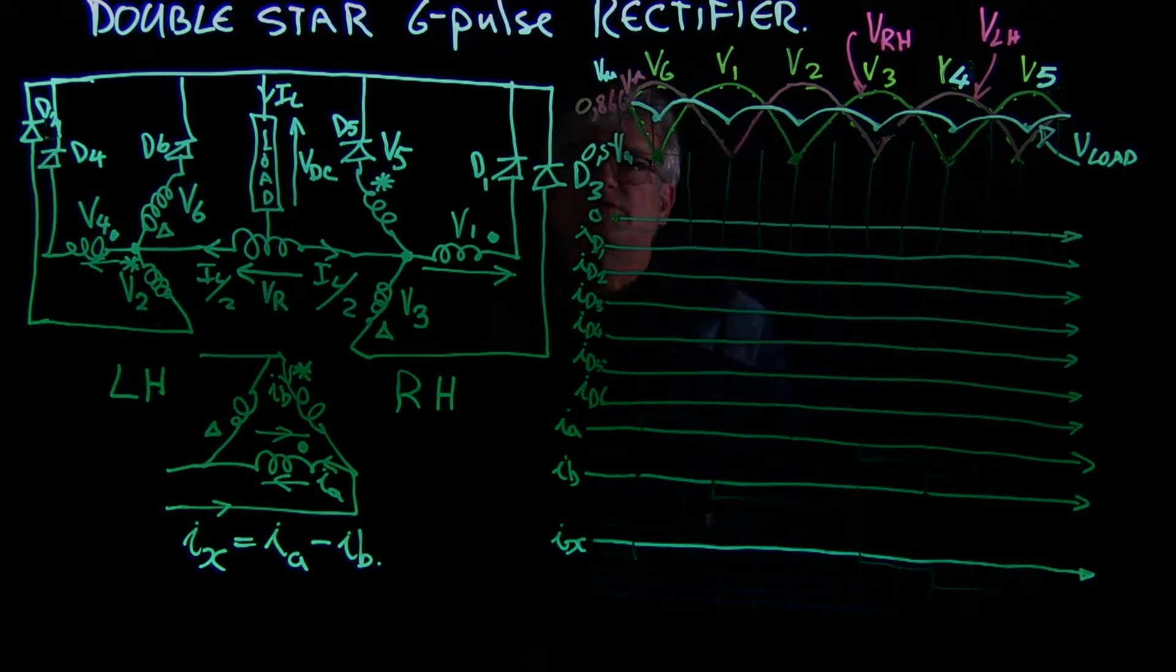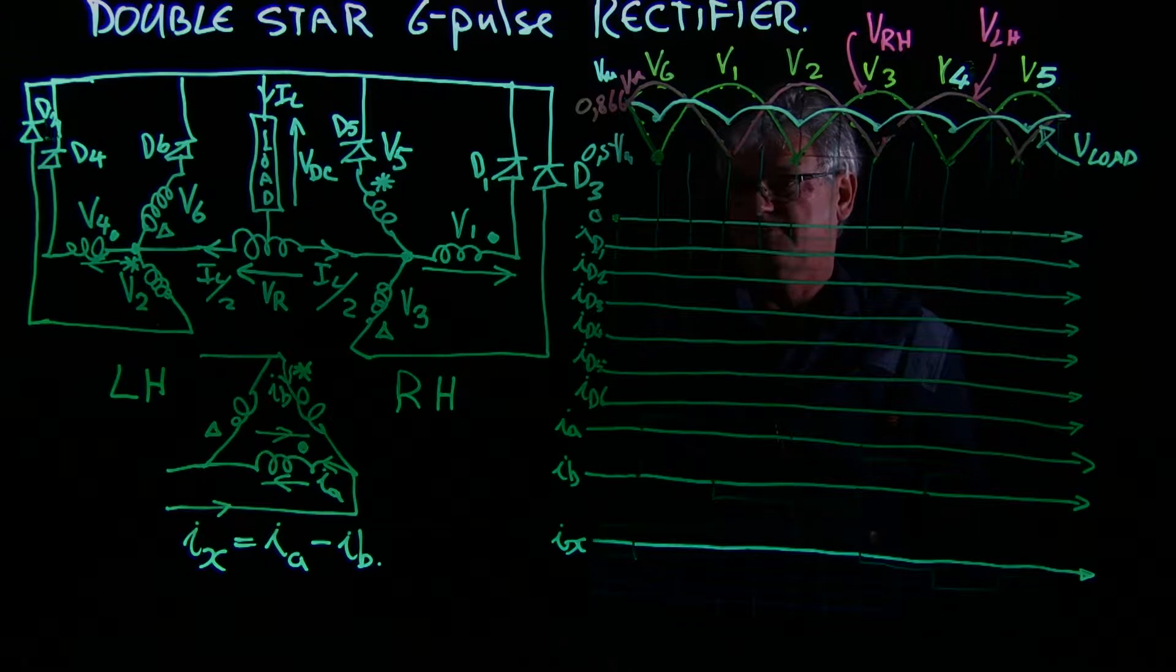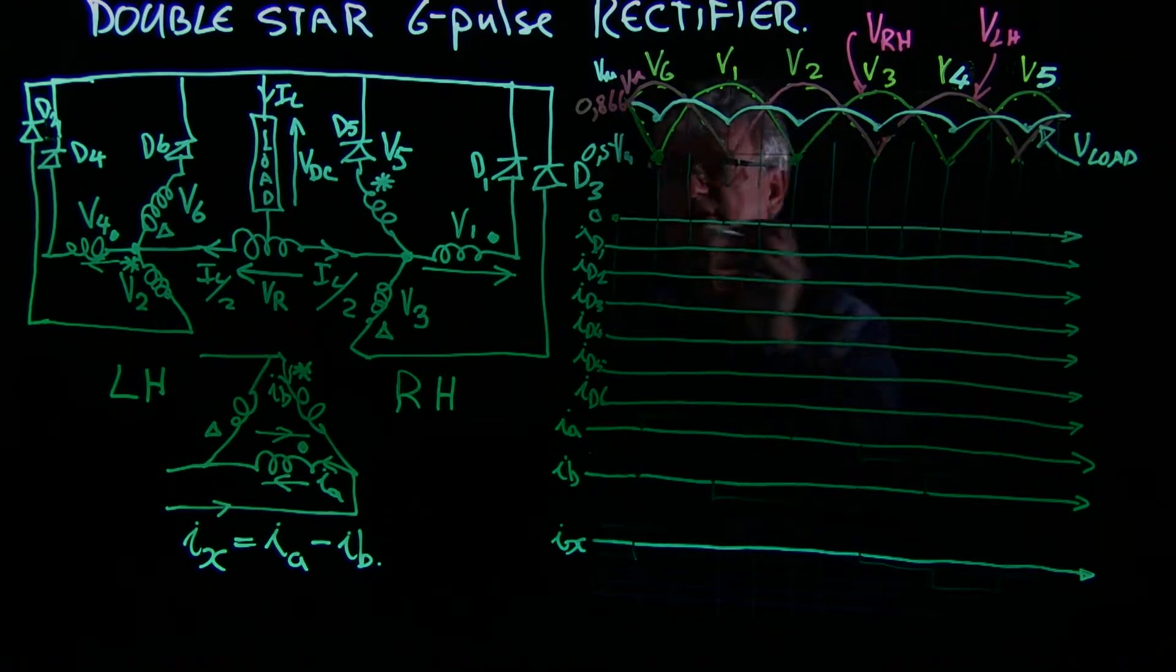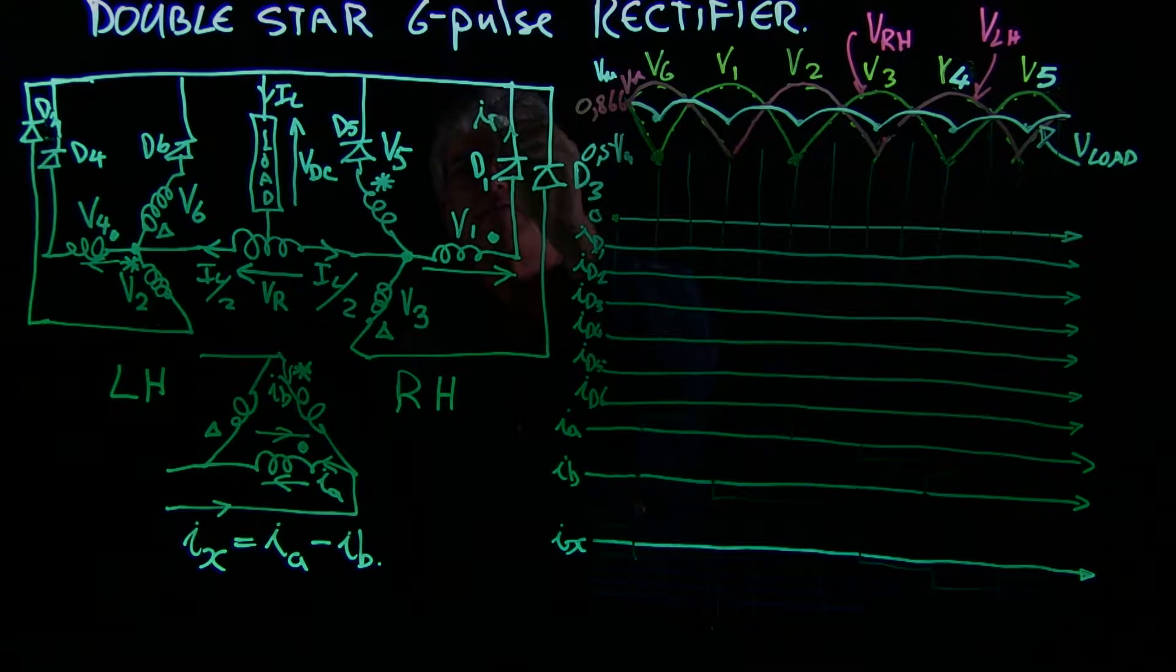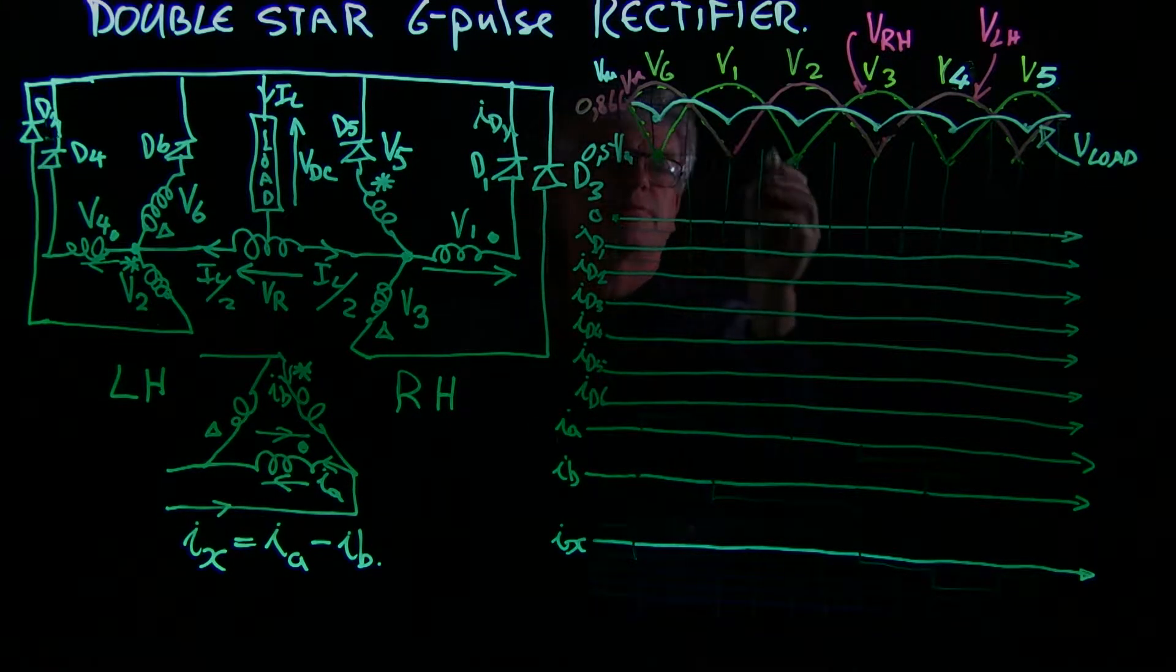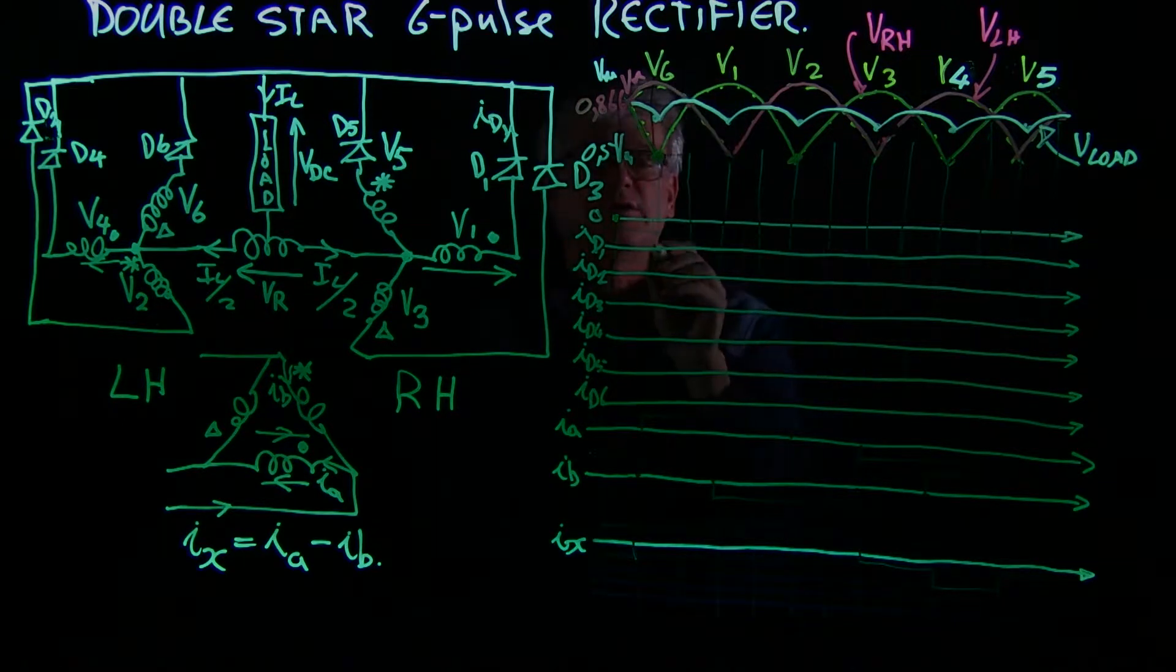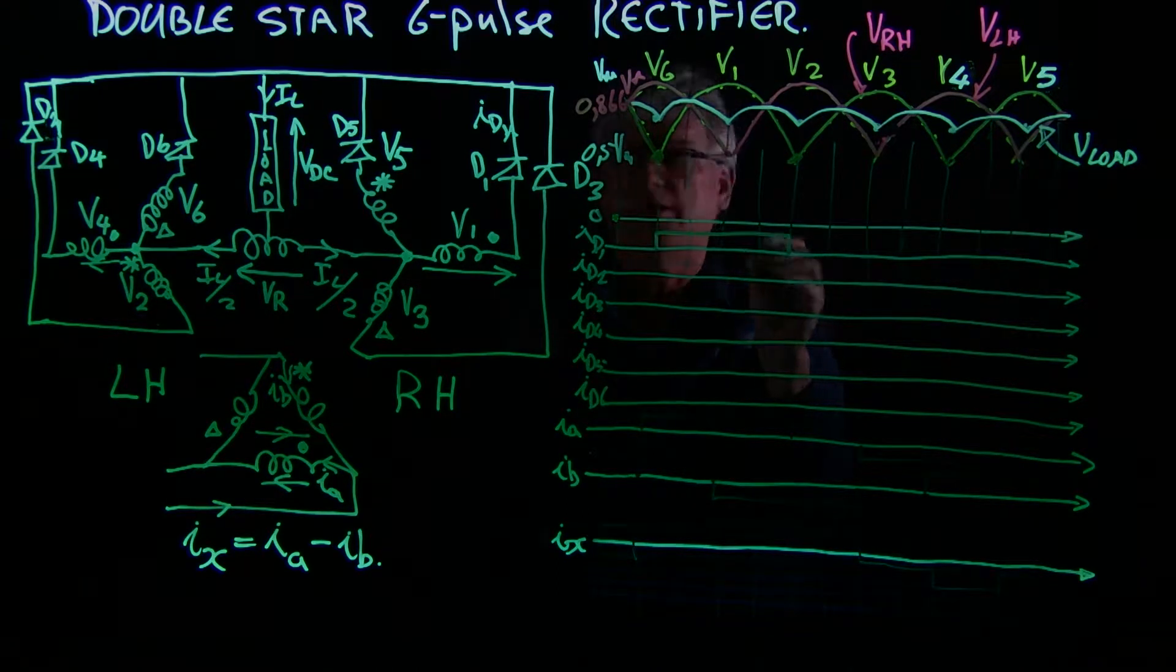Looking at the double star six-pulse rectifier waveforms, we see that ID1 flows when V1 is the most positive, which is from that point there to that point there. So it is from here up to here.